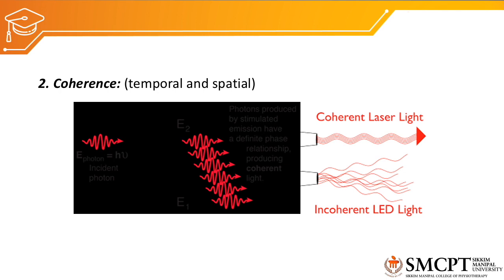The second unique property of laser is coherence. There are two types: temporal coherence, meaning all laser waves are in the same phase, and spatial coherence, meaning all laser waves travel in the same direction. In coherent laser light, all beams are in the same phase and direction, whereas incoherent LED light, though monochromatic, is distorted and not in the same phase.